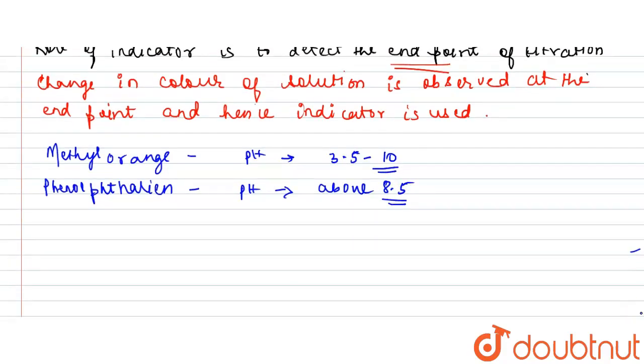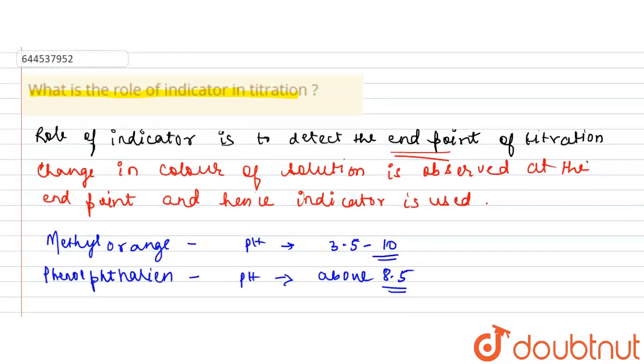So different indicators are used based upon their pH ranges and the type of reactants which you are using. So this is the role of indicator in the whole process of titration.